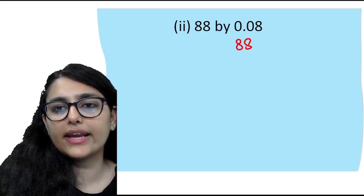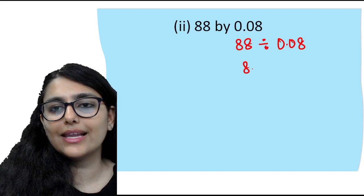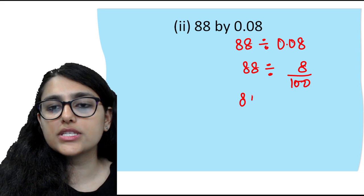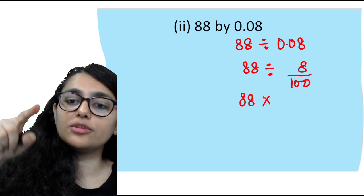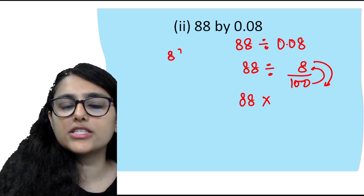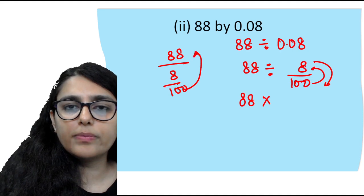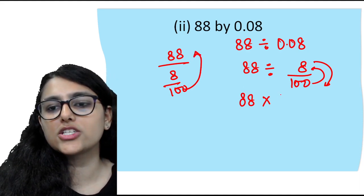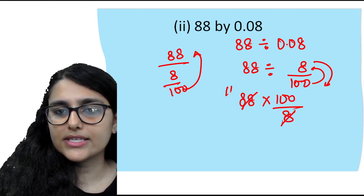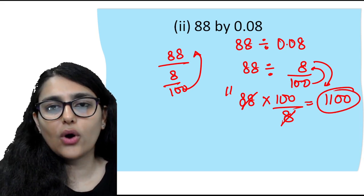Next: 88 ÷ 0.08. Convert 0.08 to fraction: 8 upon 100. So 88 divided by 8/100 becomes 88 × 100/8. That's 8800/8. Since 8 × 11 = 88, the answer is 1100.